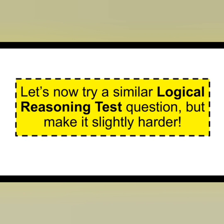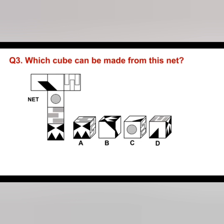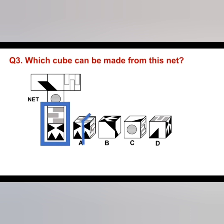Now let's try a similar logical reasoning test question, but a little bit harder this time. Which cube can be made from this net? Don't just look at the whole net and try to create a cube from it — just focus on one or two particular aspects of the net. I'm going to look at that part there. We can see that square with those particular shapes and the one above it. Straight away, I can see that A is a match for that part, but that doesn't necessarily mean it's the correct answer. We then need to look at another aspect of the net, and joining it up with that part, when the net is made up, A is actually the correct answer.